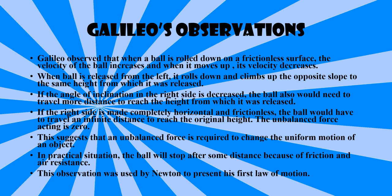This is our physics second lecture. Let's start with Galileo's observations. Galileo observed that when a ball is rolled down on a frictionless surface, the velocity of the ball increases, and when it moves up, its velocity decreases.